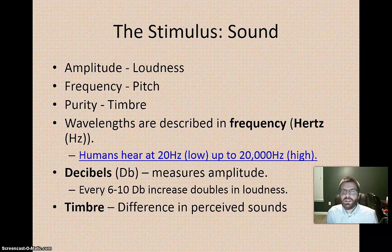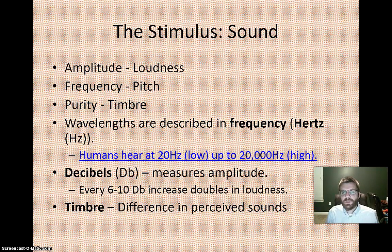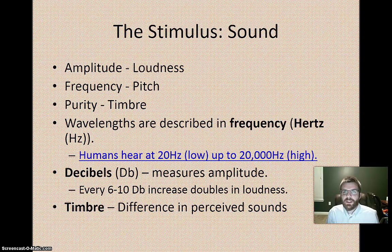Amplitude is measured in decibels and determines how loud something is. Generally, if something increases by about 10 decibels, it increases in loudness by about 100%. So if something is fairly quiet at 20 decibels, at 30 decibels it has actually doubled in loudness.